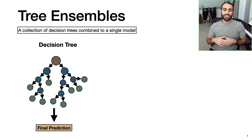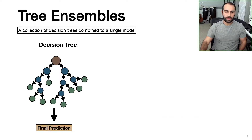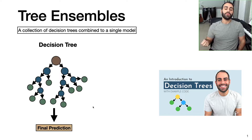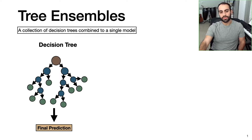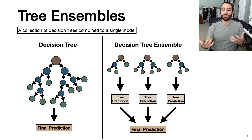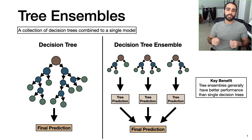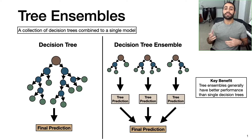A decision tree ensemble is a collection of decision trees which are combined into a single model. If you recall from the previous video, decision trees were a way we can make predictions through a series of yes or no questions. You start at the top node and follow the arrowheads based on predictor variable values, which eventually lead you to your final prediction. A decision tree ensemble, on the other hand, has multiple decision trees, each giving a prediction, and we combine these predictions together to give our final estimation. The key benefit is that it generally performs better than any single decision tree alone.